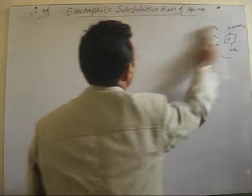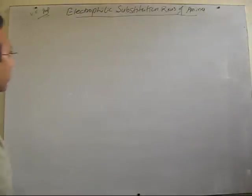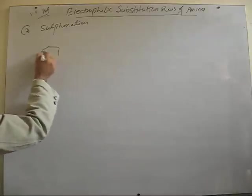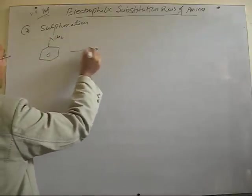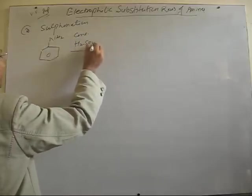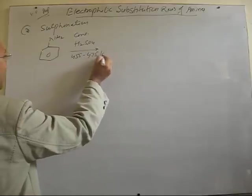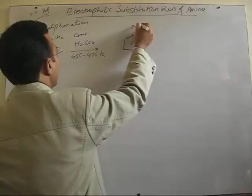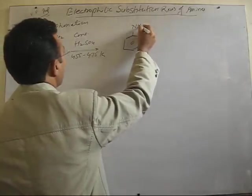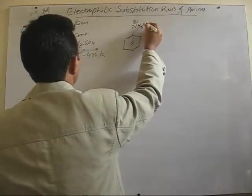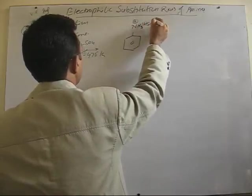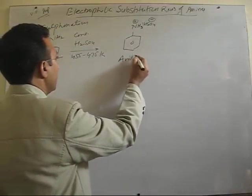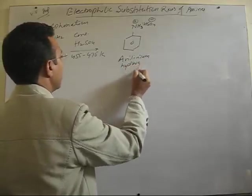Next electrophilic substitution reaction we will discuss is sulfonation. So, when aniline is heated with sulfuric acid, concentrated sulfuric acid at a temperature range 455 to 475 Kelvin, we initially get cation due to protonation of aniline, that is this. This cation, which we have got, this is anilinium hydrogen sulfate.